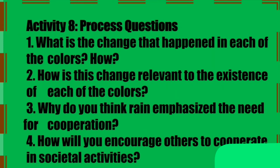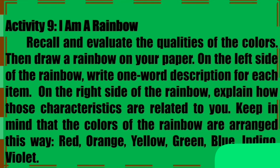Now let's move on to activity number nine: I Am a Rainbow. You are going to recall and evaluate the qualities of the colors, then draw a rainbow on your paper. On the left side of the rainbow, write a one-word description for each color. On the right side of the rainbow, explain how those characteristics are related to you. Keep in mind that the colors of the rainbow are arranged this way: red, orange, yellow, green, blue, indigo, and violet. Take a look at this example.